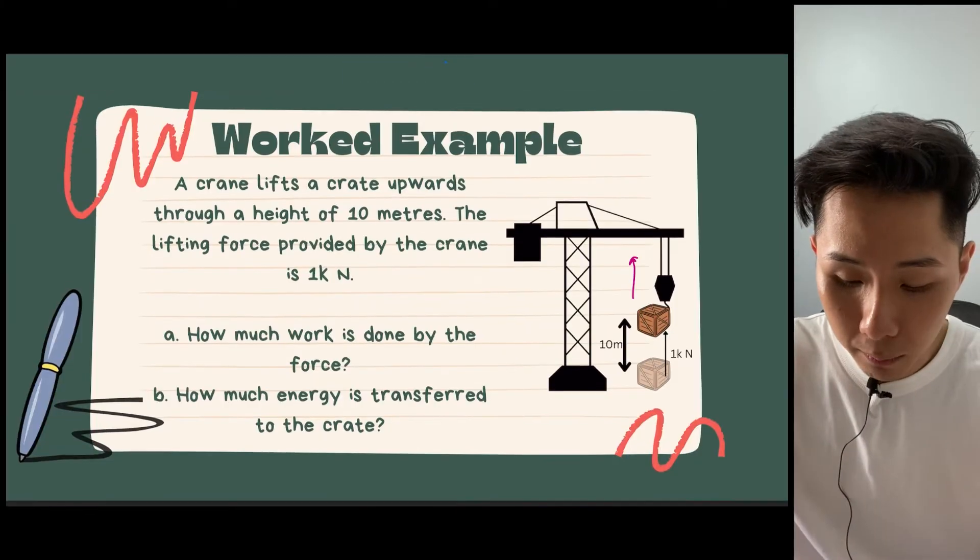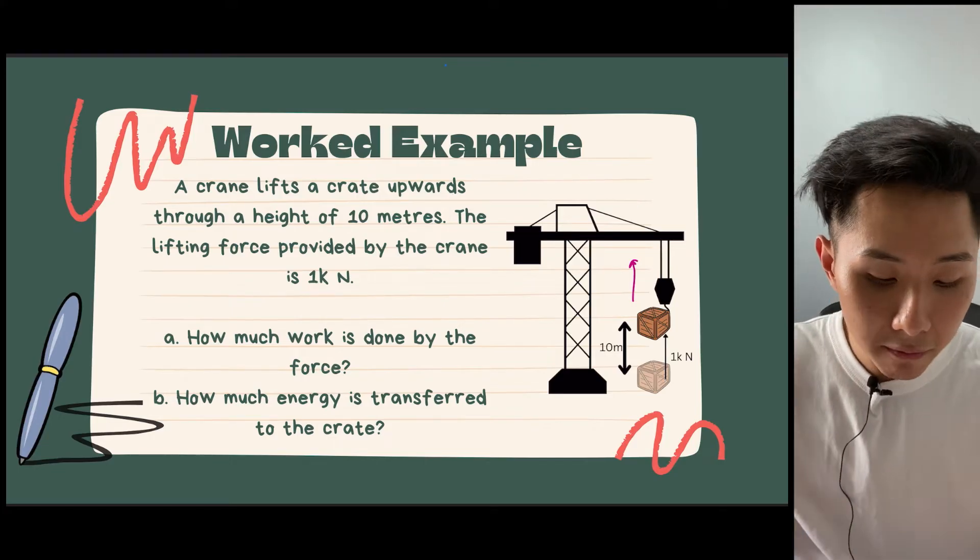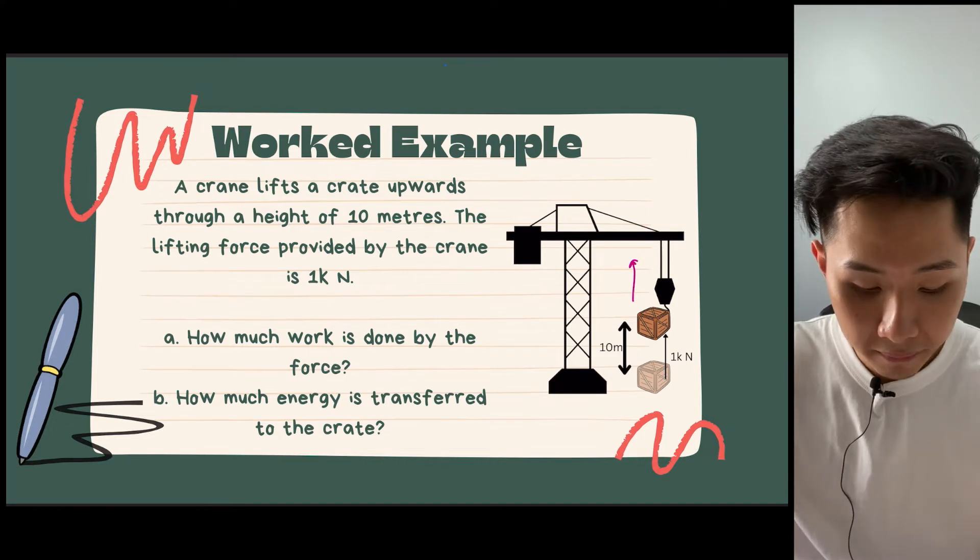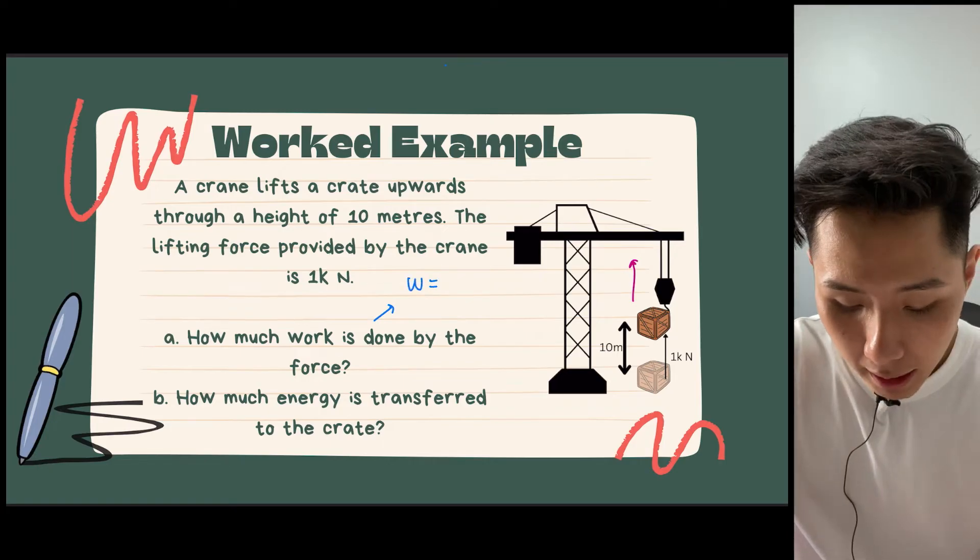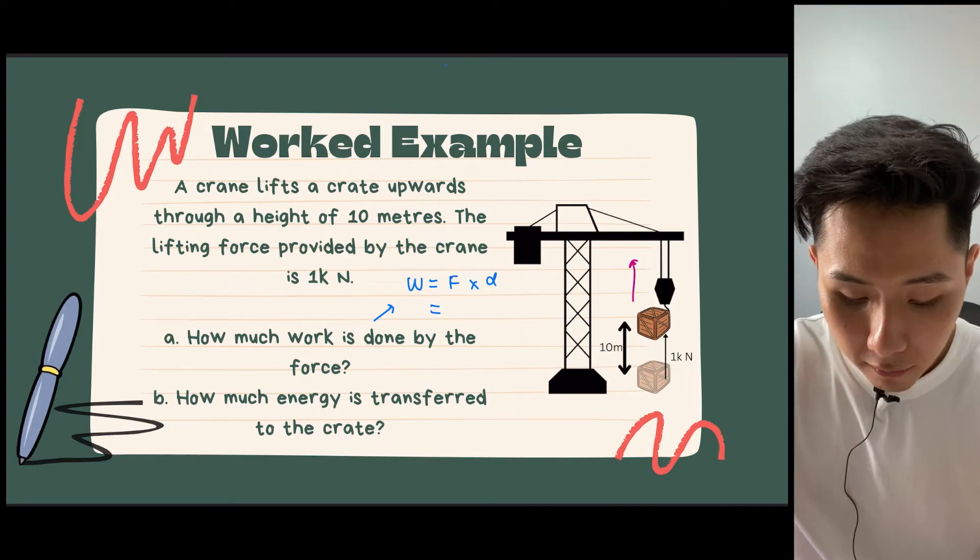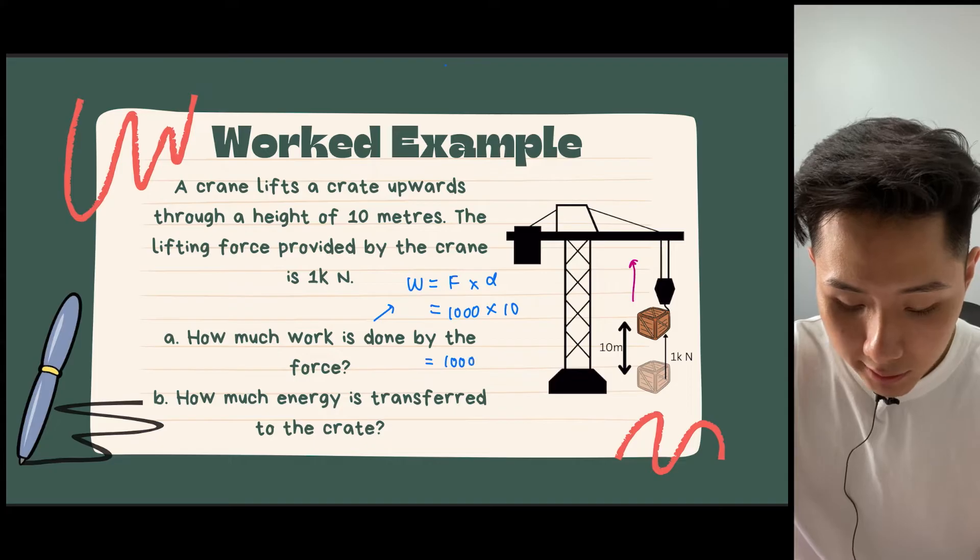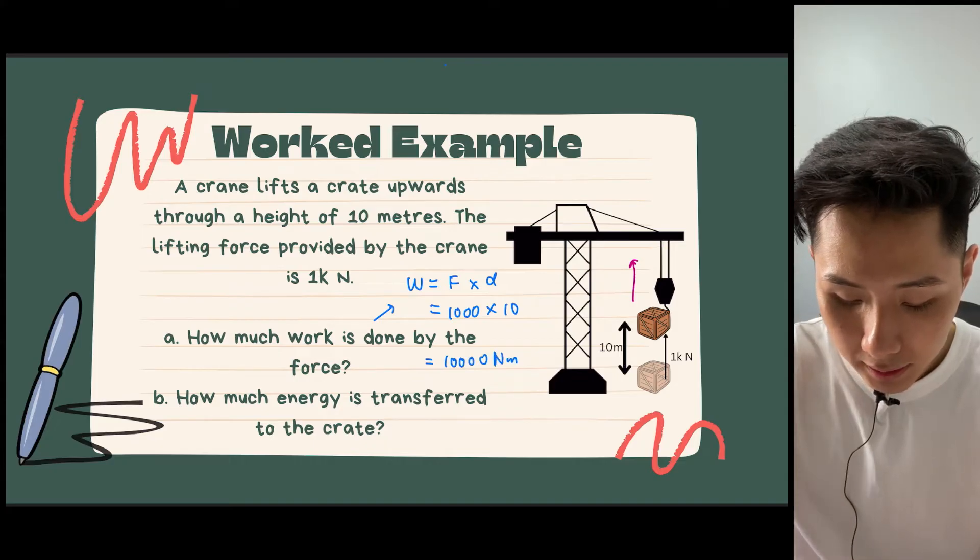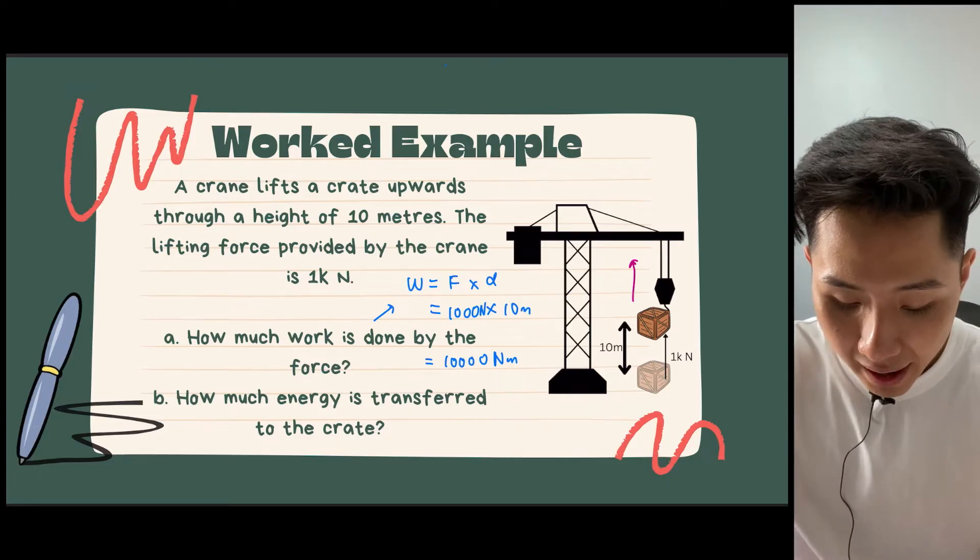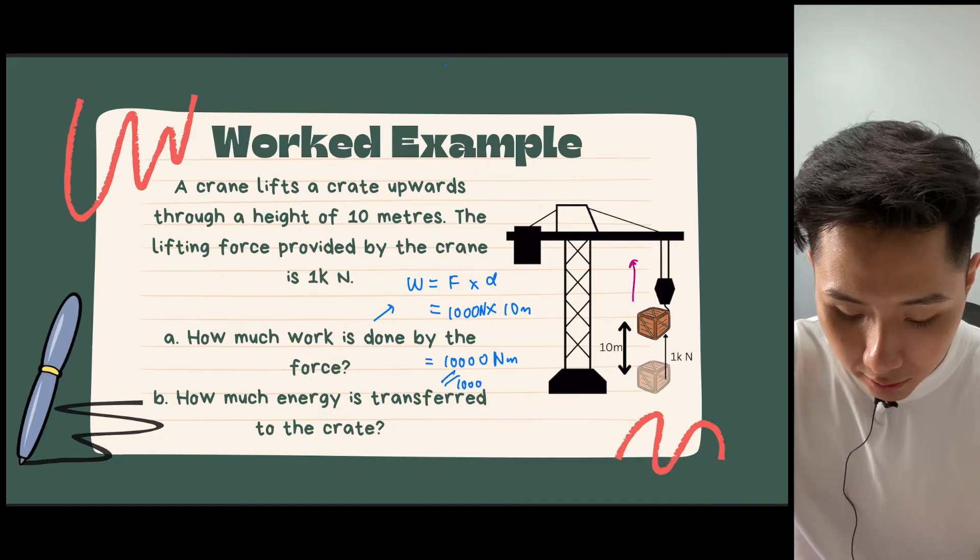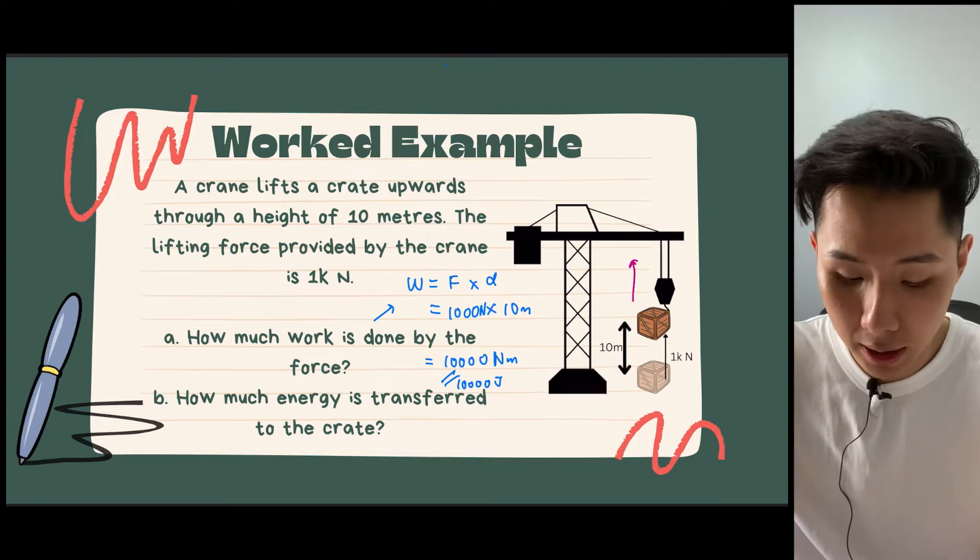So let me do an example question here. A crane lifts a crate upward through a height of 10 meters. And the lifting force provided by the crane is 1,000 newton. How much work is done? So to calculate work, we just simply use the formula W equal to F multiplied by D. Force is 1,000 multiplied by the distance moved, which is 10, which I'll get 10,000 newton meter. That's the unit for work done. And it's gotten from the unit for force and also the unit for distance. And another way you can write work done is also 10,000 joules.